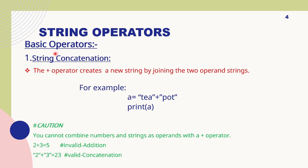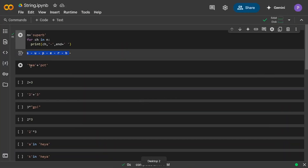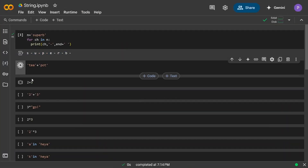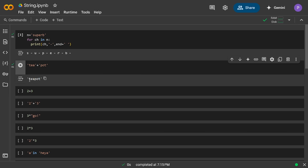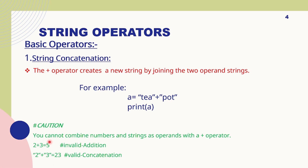String operators — the first one is basic operators. Here we will talk about string concatenation. Concatenation basically means adding two words and printing them. For example, 't' plus 'pot' — the addition symbol between them tells Python to add these two words. Let's see: t plus pot, if I run the program it will give 'teapot'.